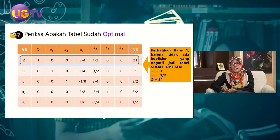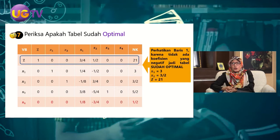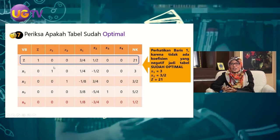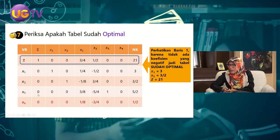Langkah ketujuh: memeriksa apakah tabel simplex yang diperoleh sudah optimal. Kriterianya adalah kita lihat di baris pertama, apakah masih ada nilai yang negatif. Kebetulan di sini sudah tidak ada nilai yang negatif pada baris pertama: 1, 0, 0, 3/4, 1/2, 0, 0, dan 21. Karena tidak ada nilai negatif, maka tabel ini sudah optimal dan kita tidak perlu melanjutkan ke iterasi ketiga.